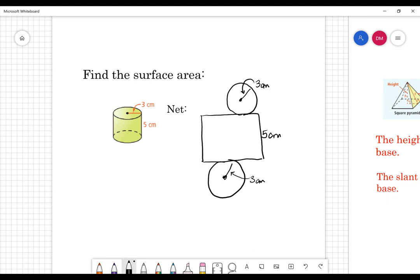And I'm going to go ahead and label the base with the circumference. So circumference is two pi r. So I'm going to do that in terms of pi, which would be six pi.